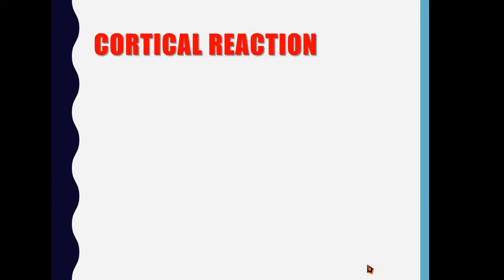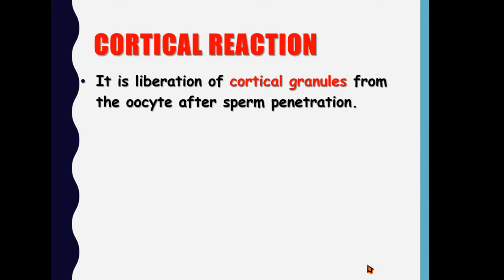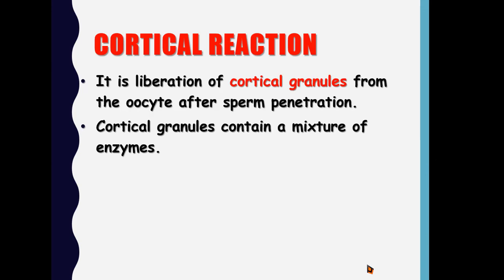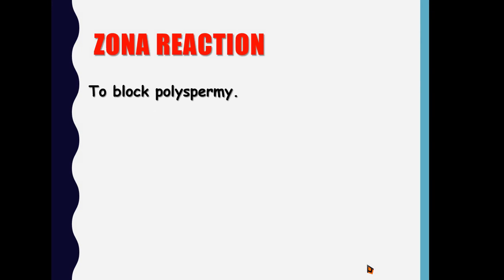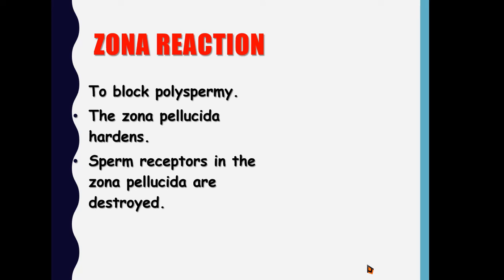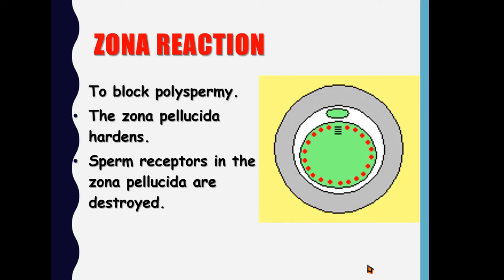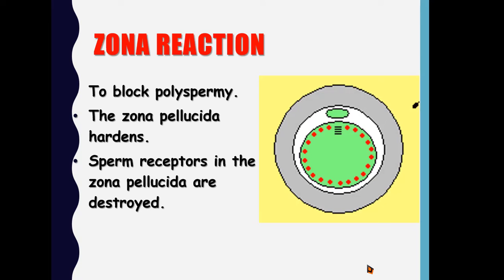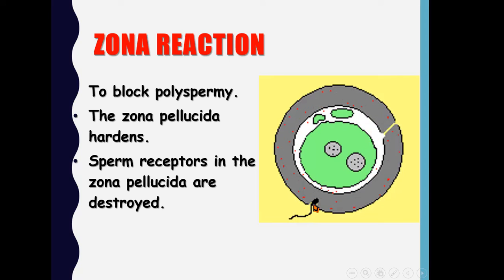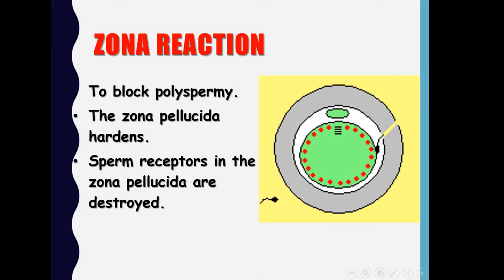After egg activation, there is another reaction called the cortical reaction. In this reaction, the egg liberates granules called cortical granules from the oocyte. These cortical granules contain a mixture of enzymes that change the structure of the zona pellucida, inducing what is known as the zona reaction. The significance of the zona reaction is that it blocks polyspermy — the penetration of the ovum by additional sperms — and the zona pellucida becomes hard and the sperm receptors over it are destroyed. You can see the cortical granules released after sperm penetration, preventing any other sperm from penetrating further.